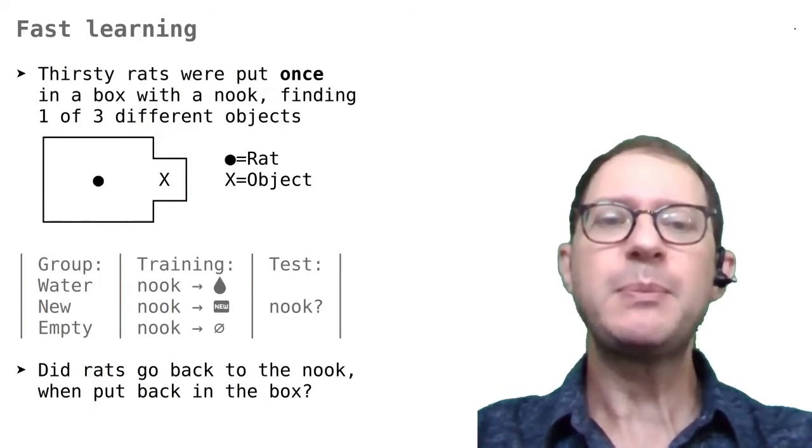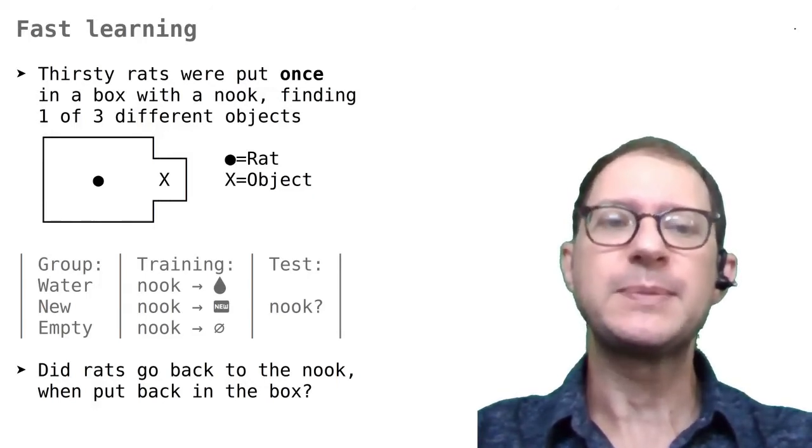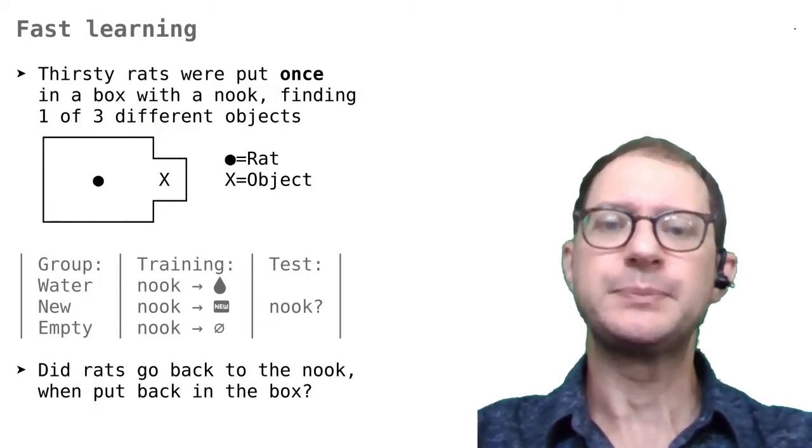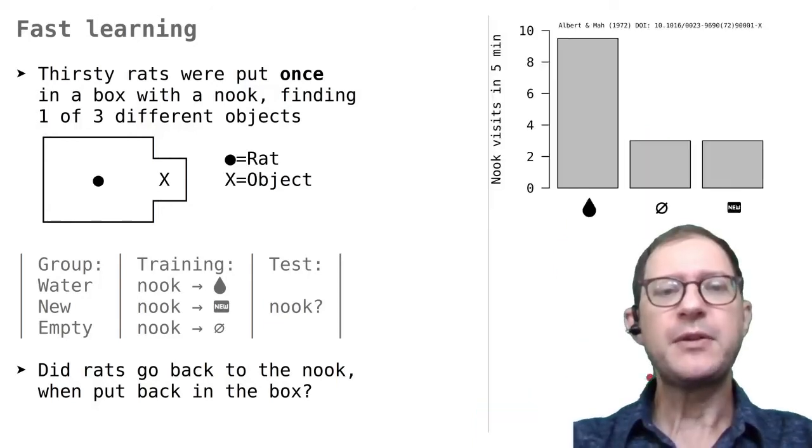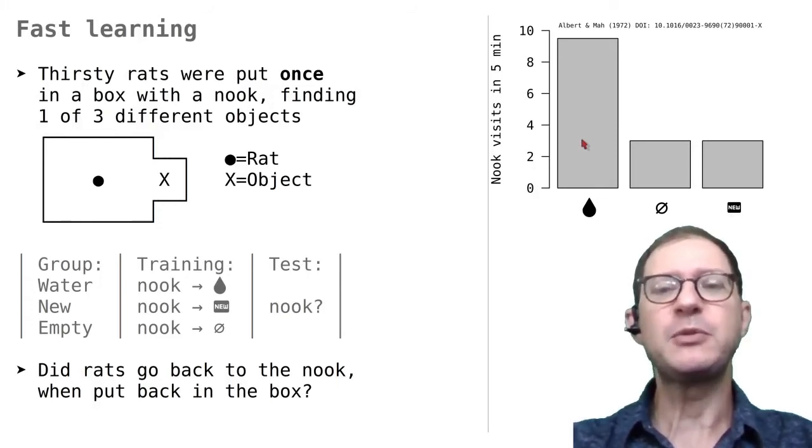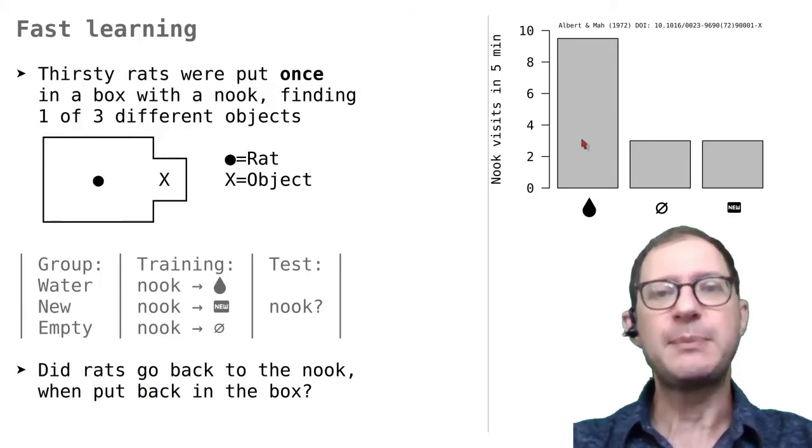48 hours later, they were placed in the box for five minutes, and they were monitored to see how much they searched in the nook. As we can see, the rats that found water in the nook searched there much more than the others. This means that just one experience of just 15 seconds finding water was sufficient to learn its location. The purpose of the new group was to check that the rats really remembered finding water, as opposed to just remembering that the nook was not empty.